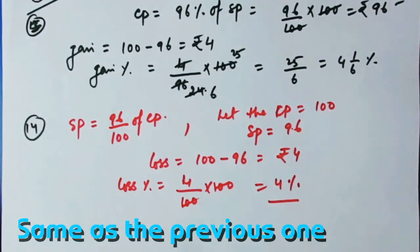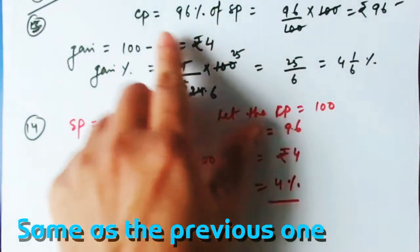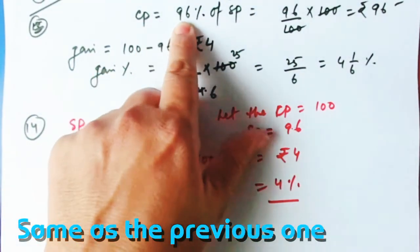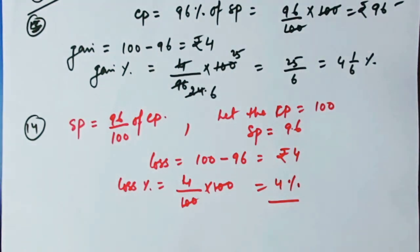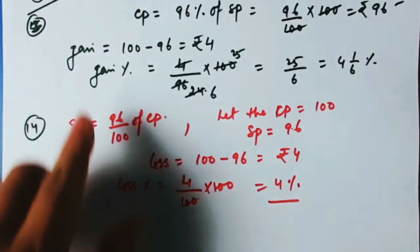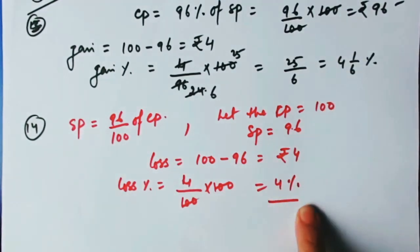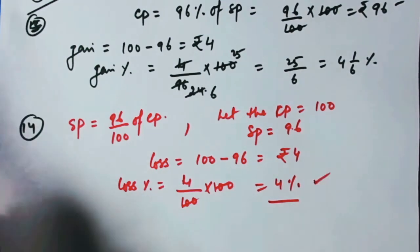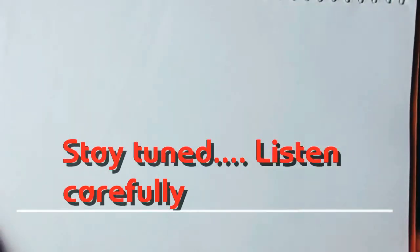These two problems illustrate an important concept: when CP is 96% of SP you get a gain of 4⅙%, but when SP is 96% of CP you get a loss of 4%. Children might wrongly assume both give the same result, but the answers are totally different.